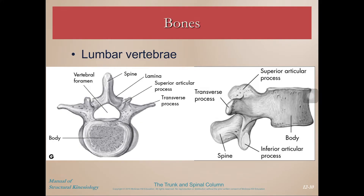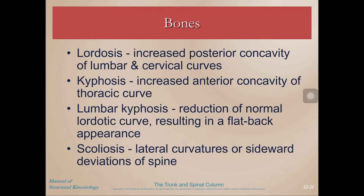The lumbar vertebrae have the largest body of all because they have to bear all of that load. This allows for more shock absorption. We have the spinous process, the lamina, the superior articular process, the transverse process, and the inferior articular process. You should be able to look at any one of these bony structures and tell whether it's a cervical, thoracic, or lumbar vertebra.